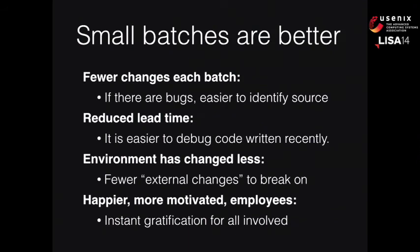With smaller changes in each batch, if there's a bug, you know where it is. If there are 1,000 changes in a big batch and there's a bug, you have to figure out which of those 1,000 changes caused it. Small batches also reduce lead time — it's easier to debug code you've recently worked with. If you do a software upgrade once a year and find a bug, the developer has to find the code and refresh their memory. If it's code they wrote this morning, it's much easier to debug. Also, the environment has changed less between releases.